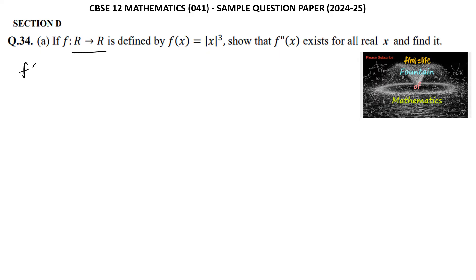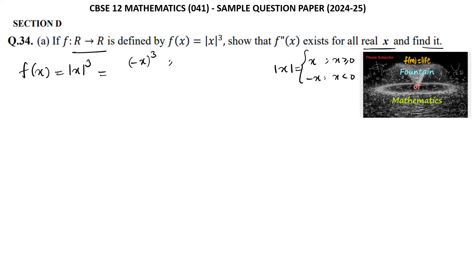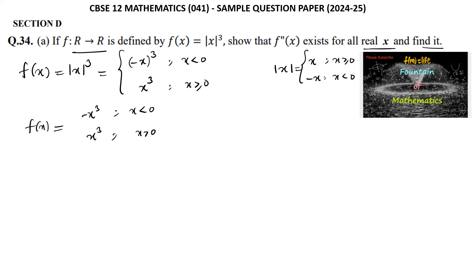Given function f from R to R defined by f(x) = |x|³, we need to show that the second order derivative f''(x) exists for every real number and find it. We know that |x| = x when x ≥ 0 and -x when x < 0. So f(x) = -x³ when x < 0, and x³ when x ≥ 0.